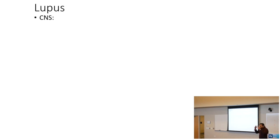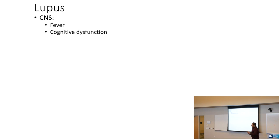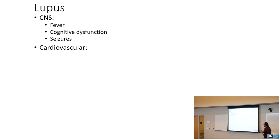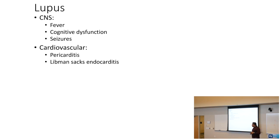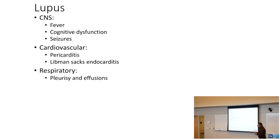Lupus is a multi-system disorder. CNS presentations include fever, cognitive dysfunction, and seizures. Cardiovascularly, there is pericarditis and Libman-Sacks endocarditis. Respiratory manifestations include pleurisy and effusions.